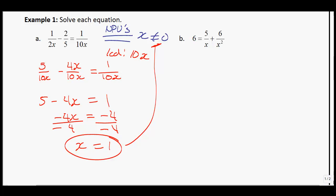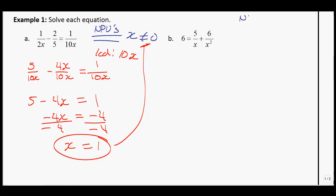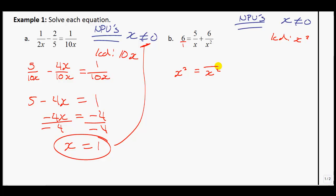Now example 1b. The NPV for this one is also x cannot equal 0. For the LCD: the 6 is technically over 1, so we just need the highest exponent, which is x squared. The LCD is x squared. Writing everything over x squared: the 6 term is already good. Multiplying the x denominator by x gives x squared, so that numerator becomes 5x.